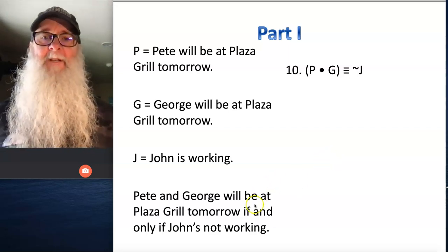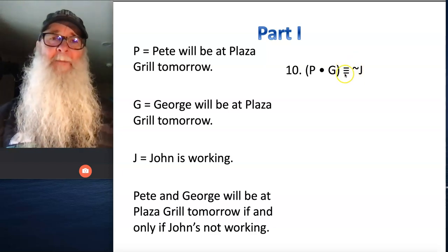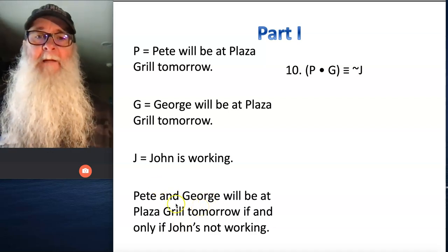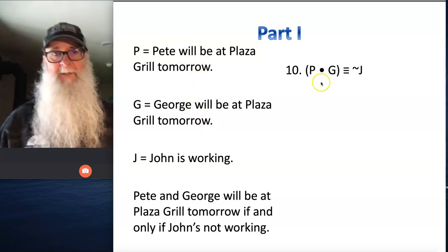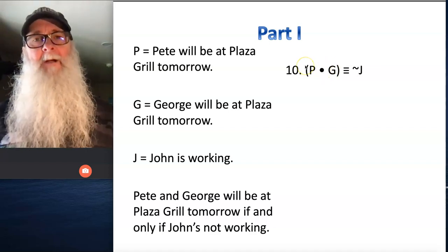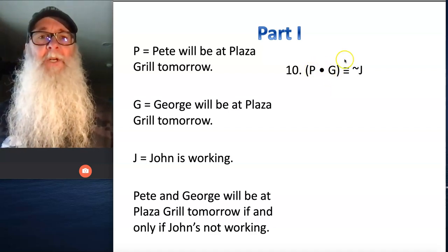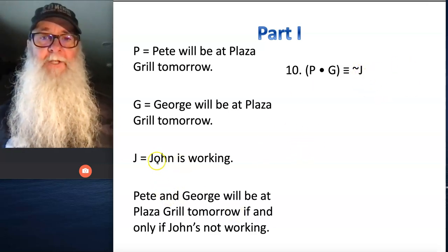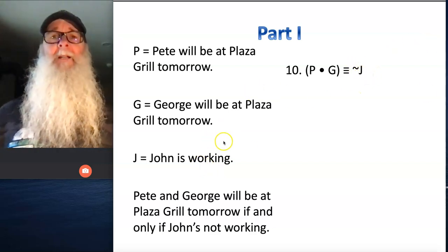And finally, number 10. We've got an if-and-only-if statement, which means we're going to be using triple bar. We've got two things smashed together: 'Pete and George will be at Plaza Grill tomorrow,' which means 'Pete will be at Plaza Grill tomorrow' and 'George will be at Plaza Grill tomorrow.' We're going to join those two sentences with a dot and bracket them with parentheses, because these two things will occur if and only if — triple bar — John's not working. We've translated 'John's not working' as 'John is working' and then negated it with a tilde in our symbolic representation.